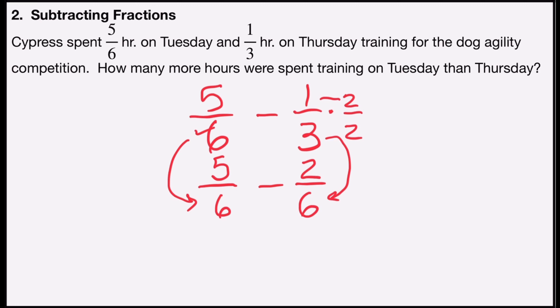And so now I have 5/6 minus 2/6. I'll subtract the numerators: five minus two is three, and keep the same denominator, six. And then I can see if I can reduce it. Three and six both have a factor of three.